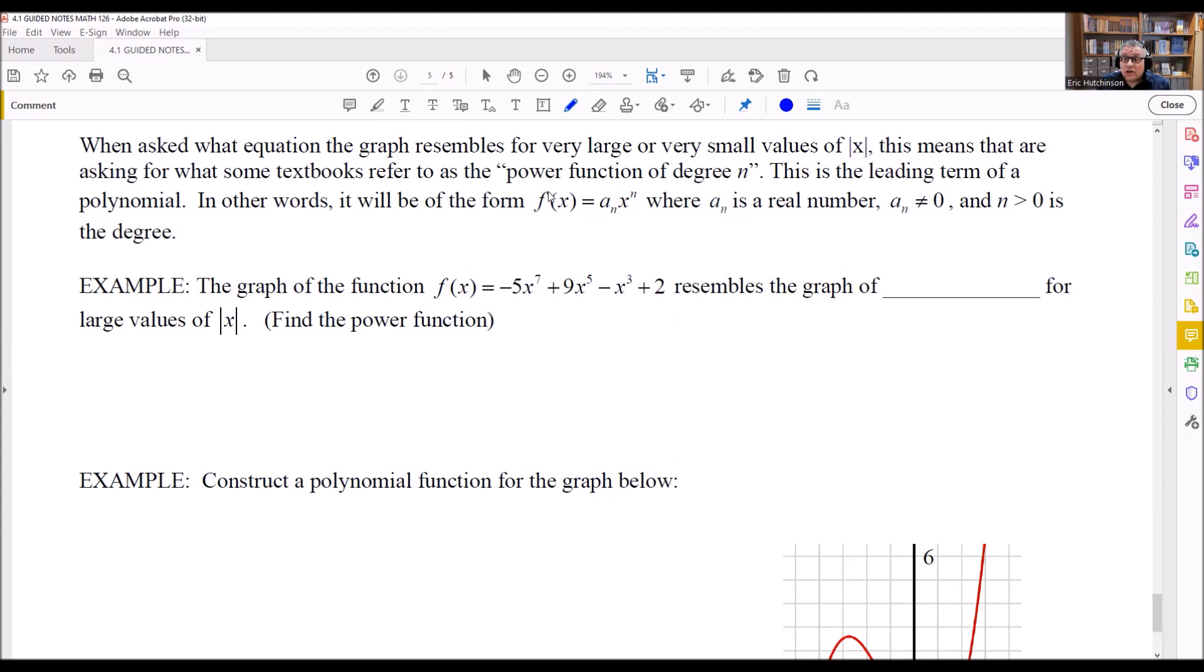When you want to answer this question here, it says the graph of the function resembles the graph of what for large values of absolute value of x. In other words, what this is asking for is it's asking you to find the power function. All you have to do for this is just write down the leading term that you have here. So f(x) = -5x^7. That would be your answer for this one.